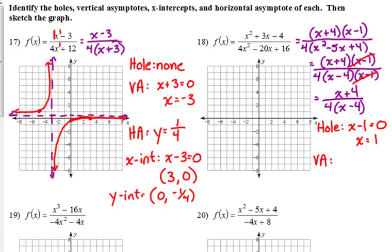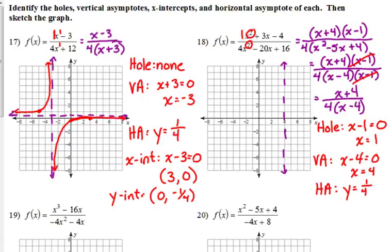For the vertical asymptote, what's left in the denominator we set equal to 0. The constant 4 does not equal 0, but x minus 4 can, so x equals 4 is our vertical asymptote. For the horizontal asymptote, comparing degree 2 over degree 2 — they're the same — so it's the ratio of the leading coefficients. Those leading coefficients are both 1 and 4, so y equals 1/4 is our horizontal asymptote again, which is coincidental.